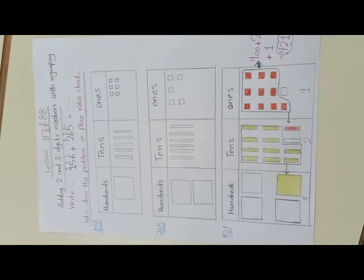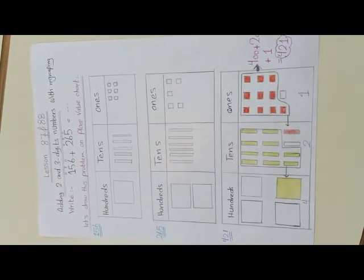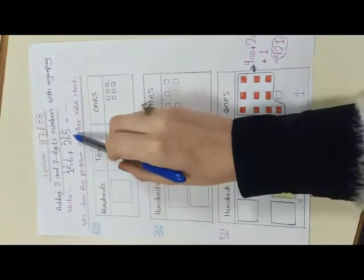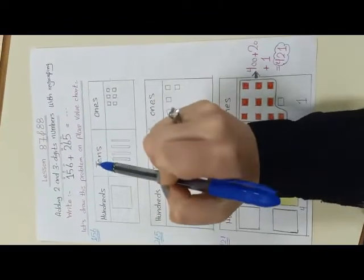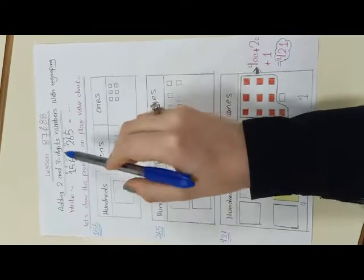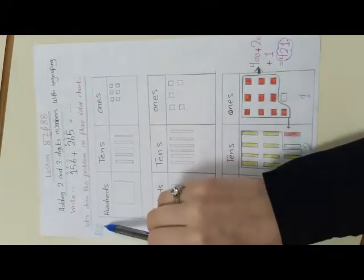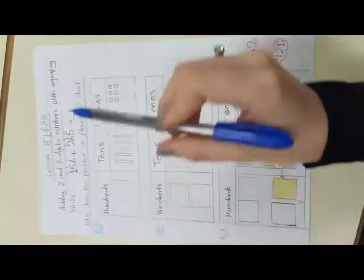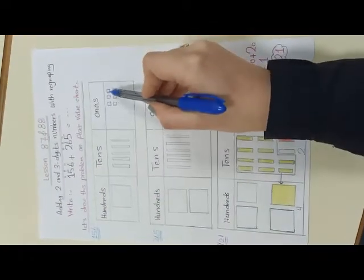Let's look at the problem together. If I have 156 plus 265, let's draw this problem in a place value chart. The first number is 156, so I have 6 in the ones. I will draw 6 little squares in ones.